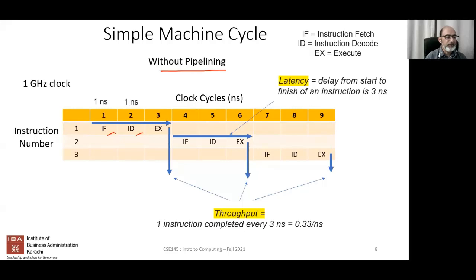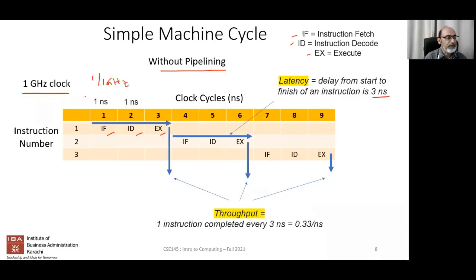Each cycle takes one cycle for instruction fetch, one for decode, and one for execution. In series it takes three cycles each. The latency comes out to three nanoseconds, assuming a one-gigahertz processor — that is, one divided by one gigahertz equals one nanosecond of clock cycle time. Latency is calculated from the start until the end of one instruction being completely executed.